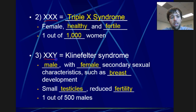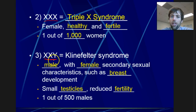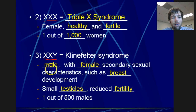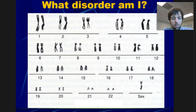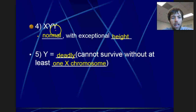Then there's Klinefelter syndrome. The question is, am I a guy or a girl? I have two X's, so it seems like I should be a girl, but that Y chromosome has one little tiny gene near the top that's going to make me male, though I will have some female characteristics. And then there is XYY — a super tall male with that extra Y chromosome.